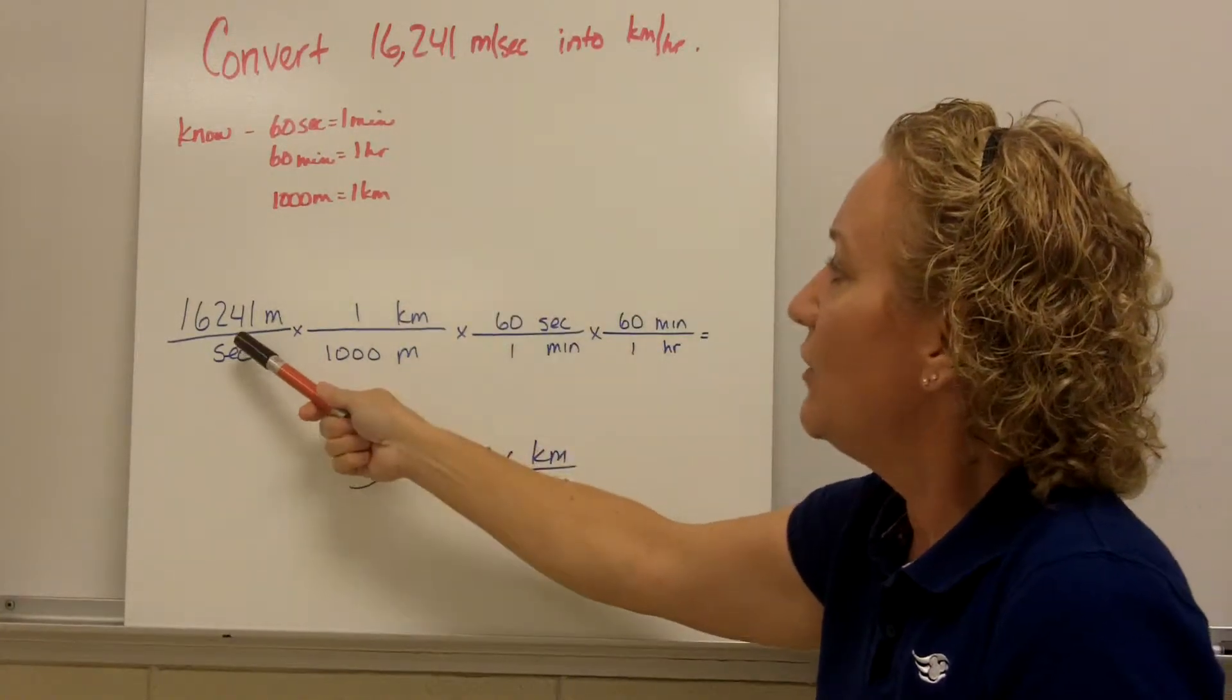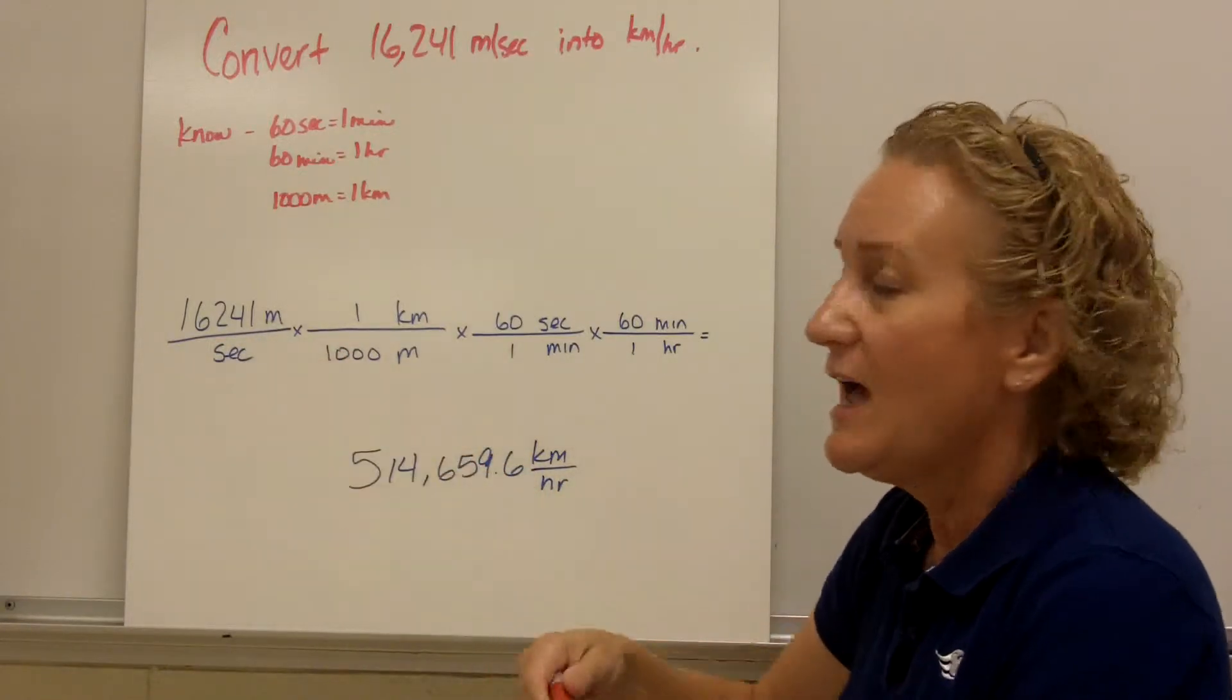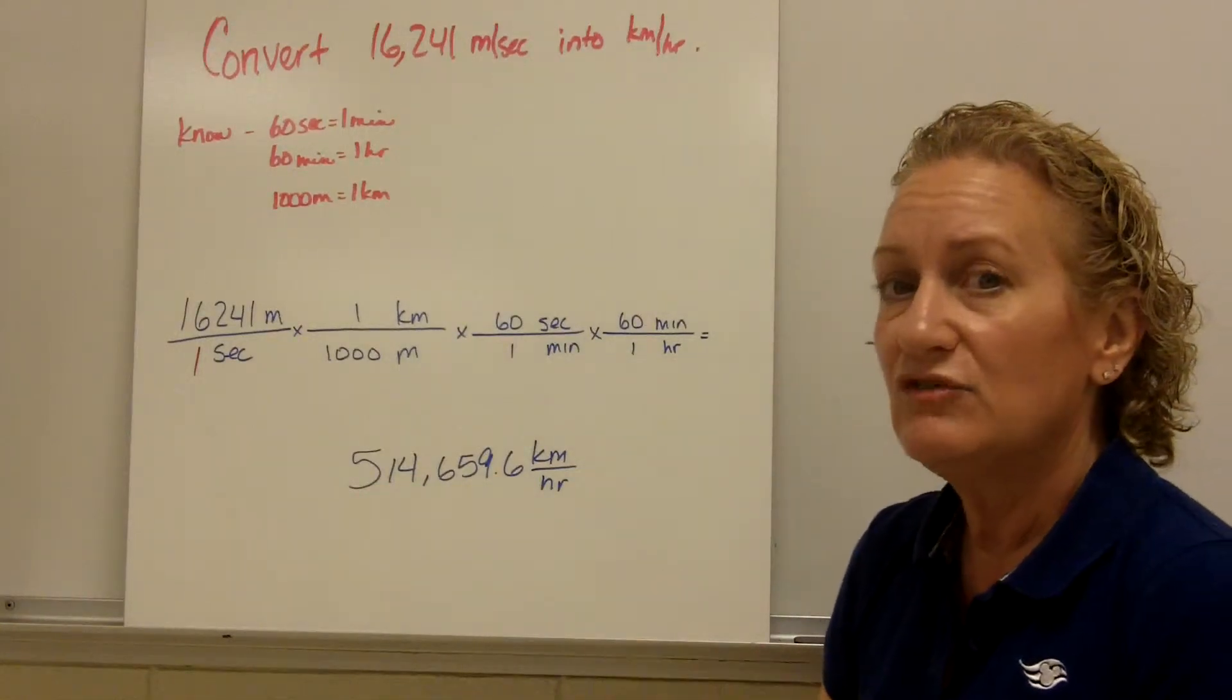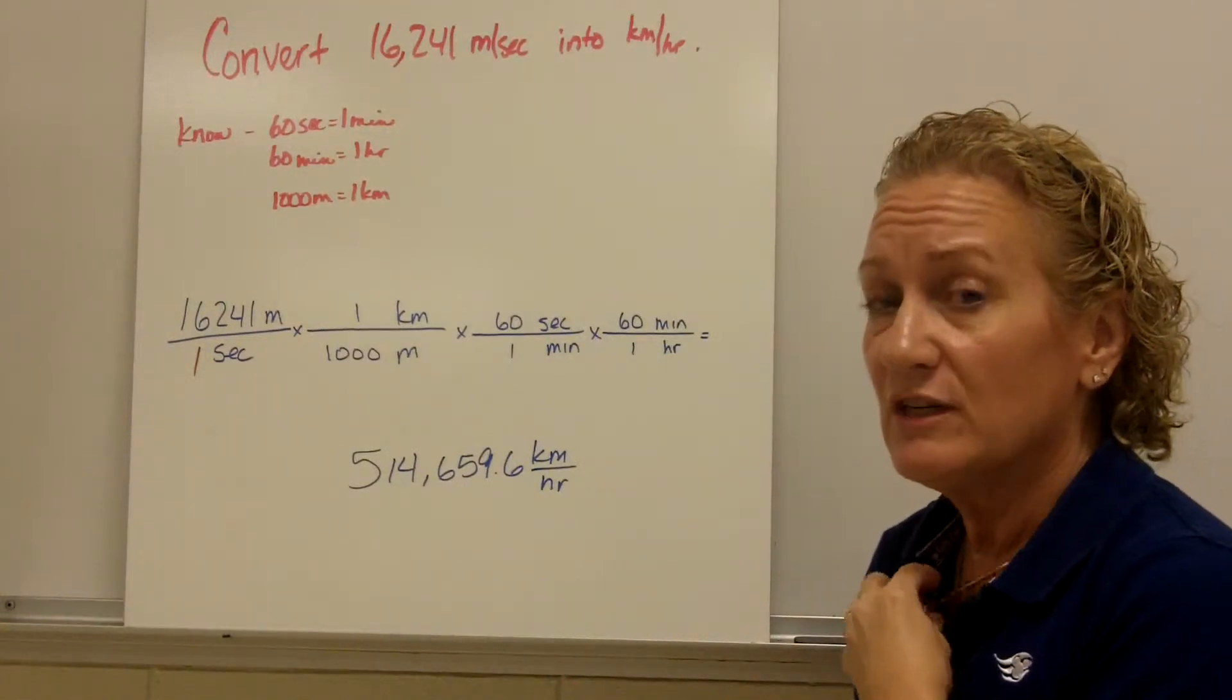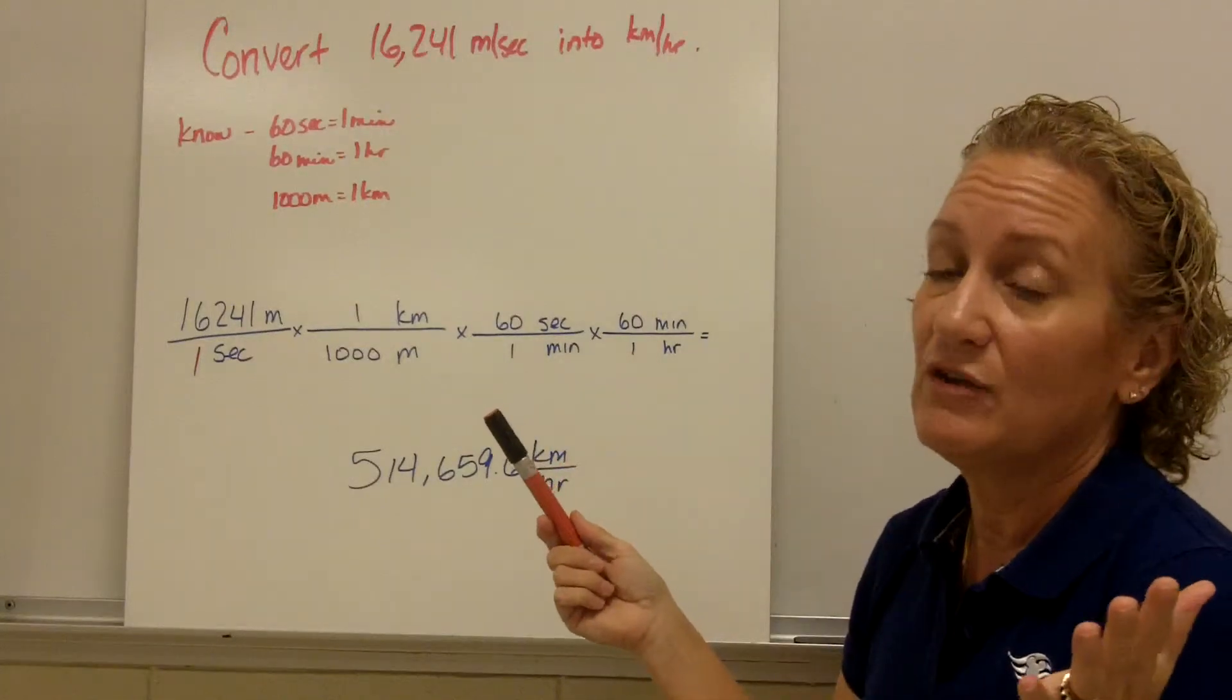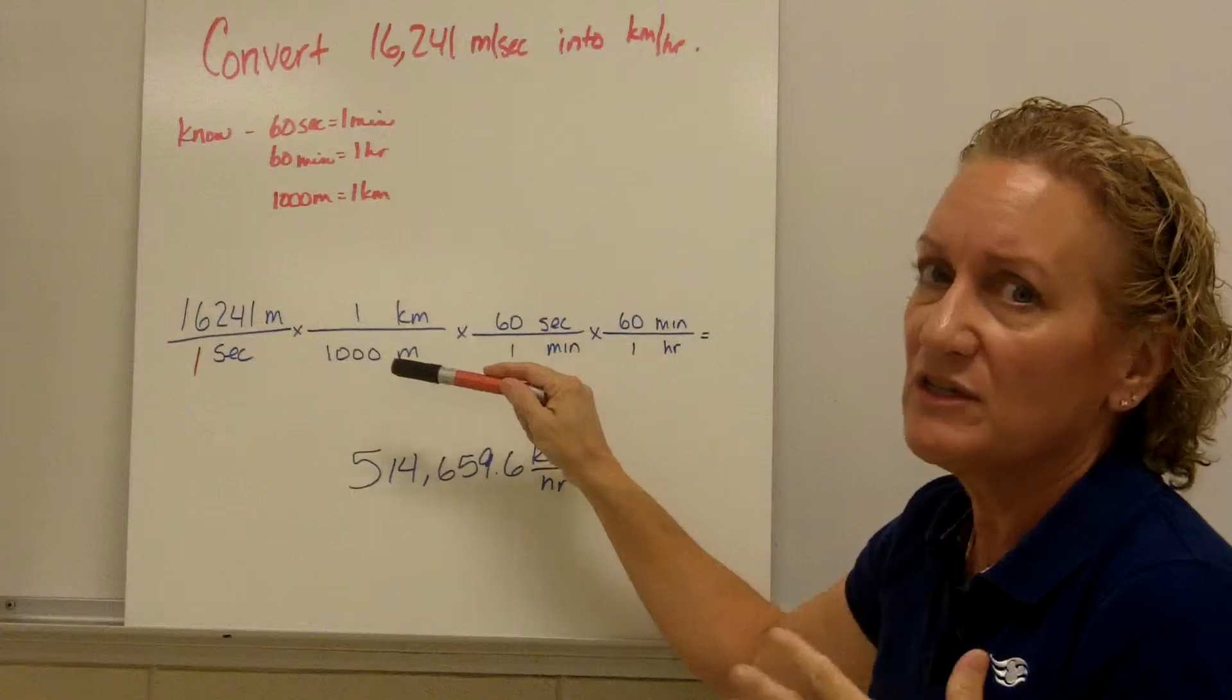So start with what I know, 16,241 meters per second. How many seconds? That's every one second. The one is understood. I don't need to draw it in there. I don't need to write it in there. It's understood. I decided to first switch meters to kilometers. You can do seconds to minutes first. It's up to you, seconds to hours first. Totally up to you. But I decided to do this first. No reason. Just did it.